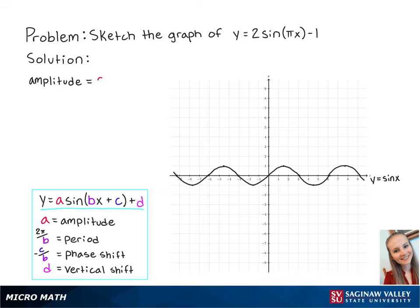The amplitude is equal to 2, the period is equal to 2 pi over pi which equals 2, and the vertical shift is down 1.